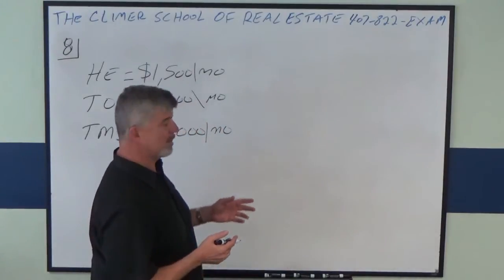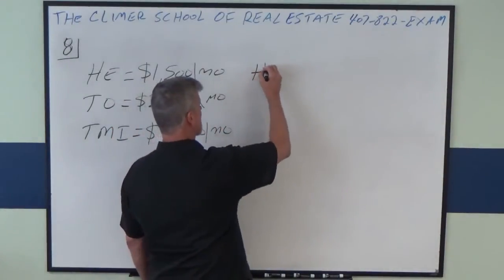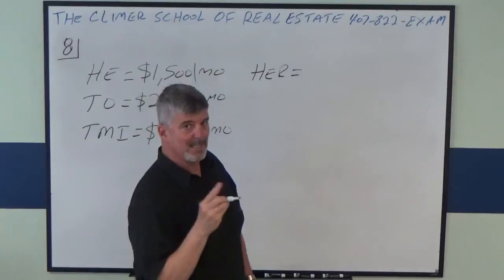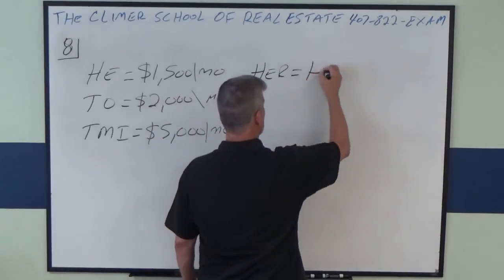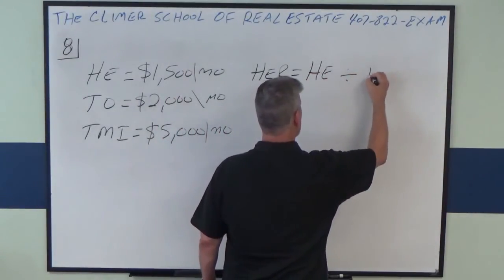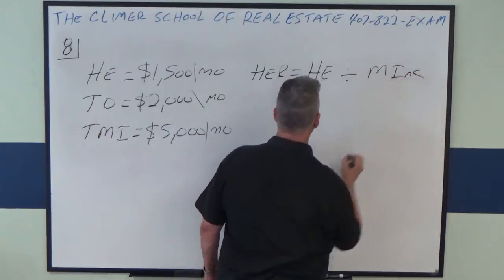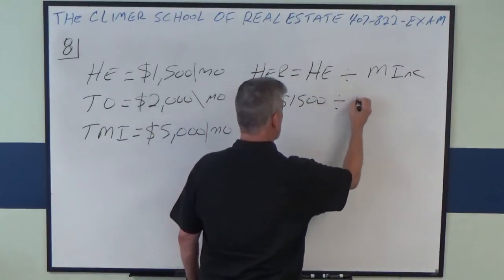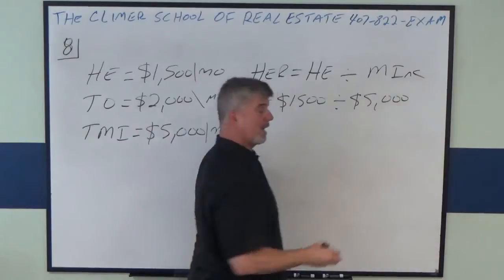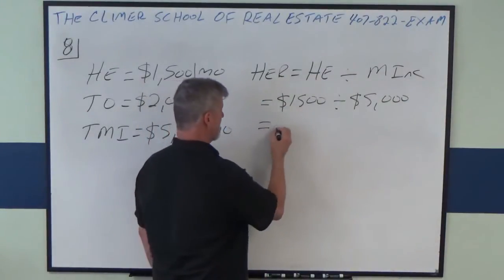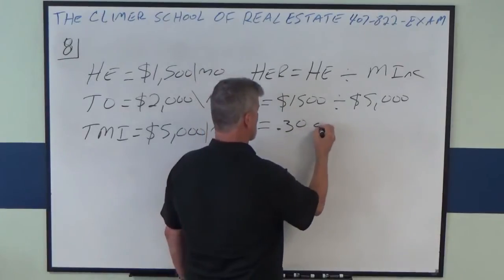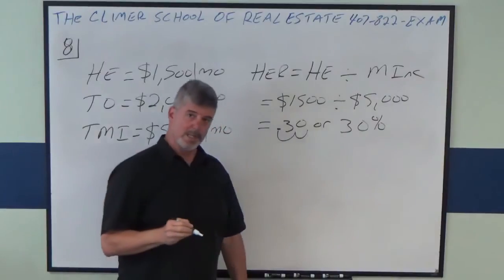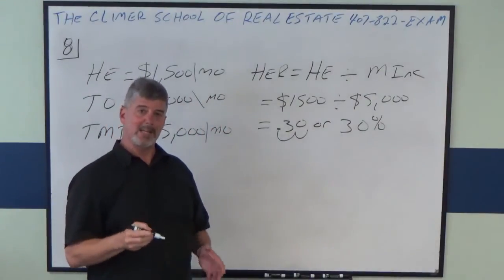If they ask you for the housing expense ratio, that's the housing expense they give you divided by the income they give you. In this case, it's $1,500 divided by $5,000, which is 30%.